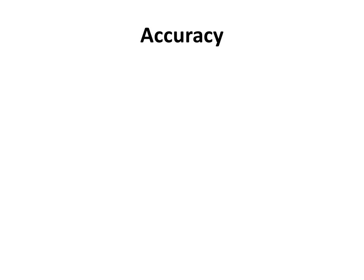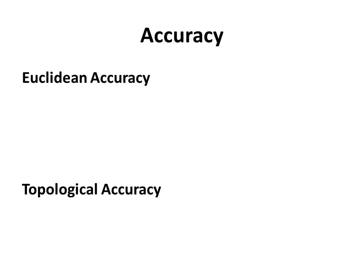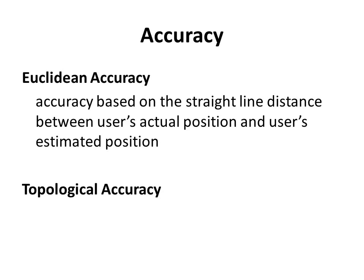Talking about accuracy in indoor positioning, we can think about two categories. One is Euclidean accuracy, and the other is Topological accuracy. Euclidean accuracy refers to the accuracy based on straight line distance between the user's actual position and estimated position. Topology deals with connections, containment, and adjacencies.